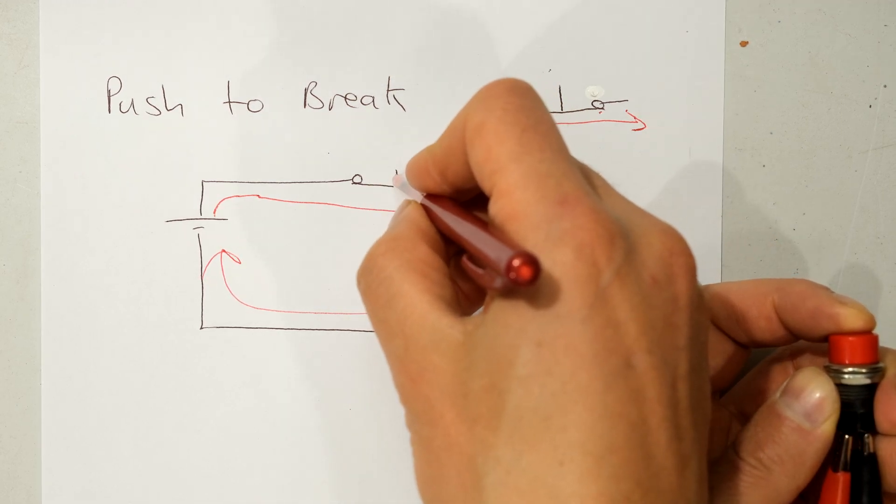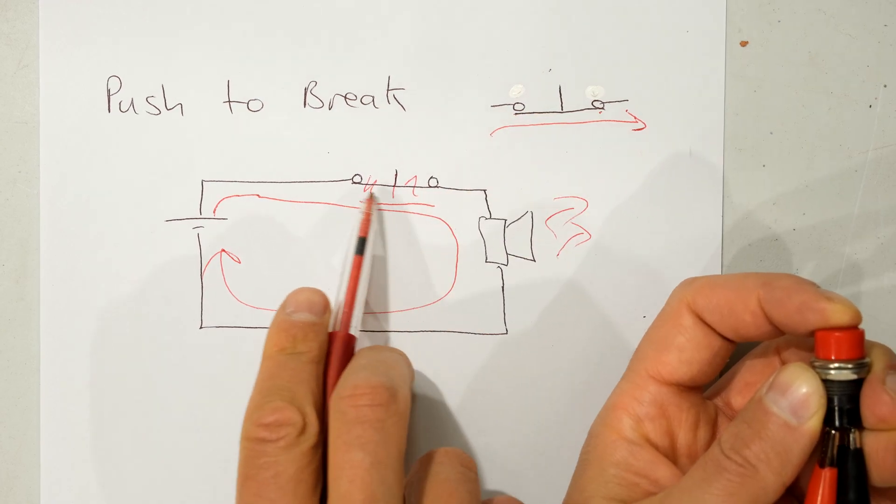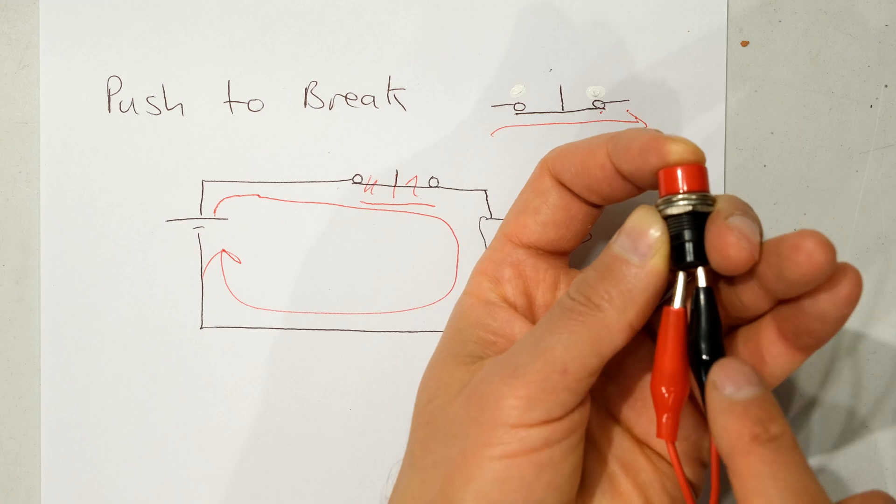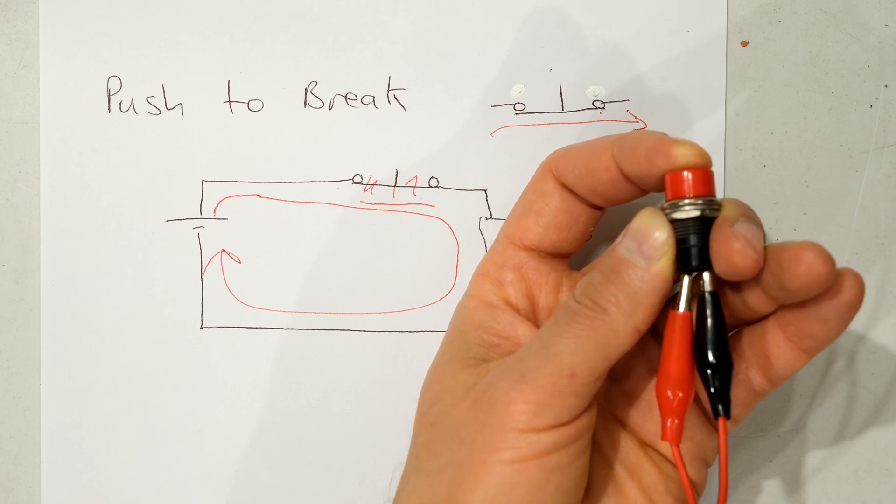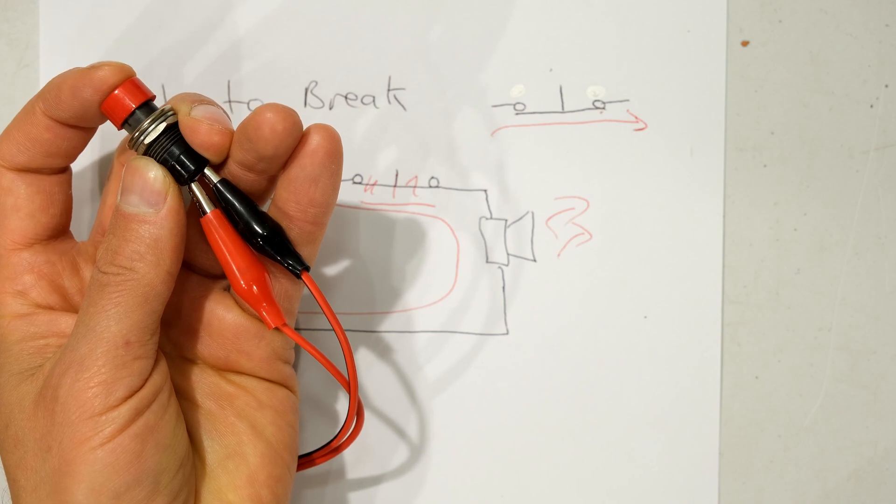Now when I depress the switch, I'm breaking the circuit. I'm actually pushing that platform down and now I am disconnecting these two poles, which means current can no longer flow and therefore this is now an open circuit. Closed circuit, open. Closed, open.